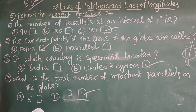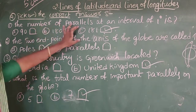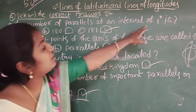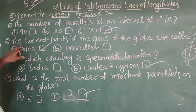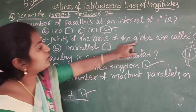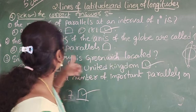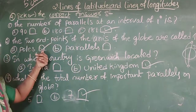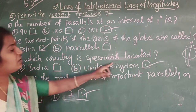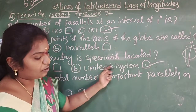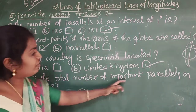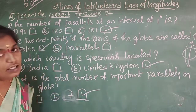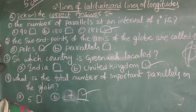Let's review. First: The number of parallels at an interval of 1 degree is 181. Second: The 2 end points of the axis of the globe are called the Poles. Third: Greenwich is located in the United Kingdom. Fourth: The total number of important parallels on the globe is 7.